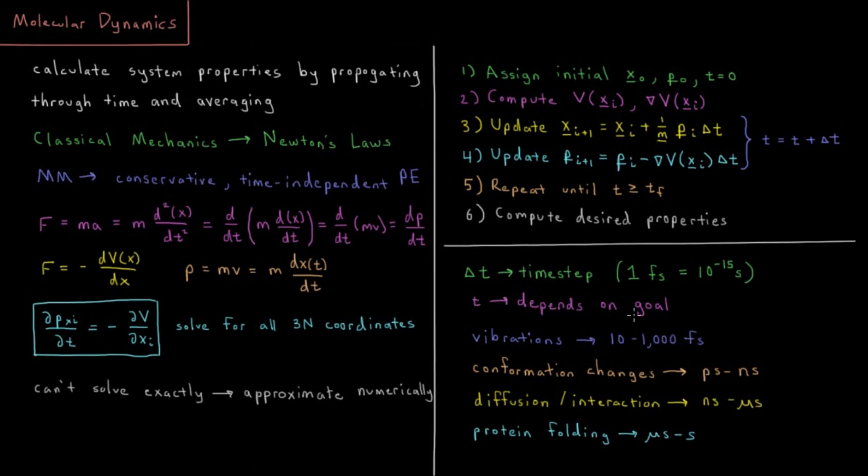So the time you want to simulate typically depends on whatever goals you have. The vibrations in systems, those occur on timescales usually of 10 to a hundred femtoseconds, less than a picosecond, one trillionth of a second. Conformational changes in molecules like bending of various torsion angles going from gauche to staggered, timescales of picoseconds. Changing secondary structures in proteins, picoseconds to nanoseconds. Diffusion of things through solution, interaction of host and guest targets, things like protein binding, nucleic acid binding, nanoseconds to microseconds. And something like protein folding, which is a very common type of application for molecular dynamics, would be in the timescale of microseconds all the way to full seconds. A lot of the longest timescale molecular dynamics simulations are large-scale protein folding simulations.